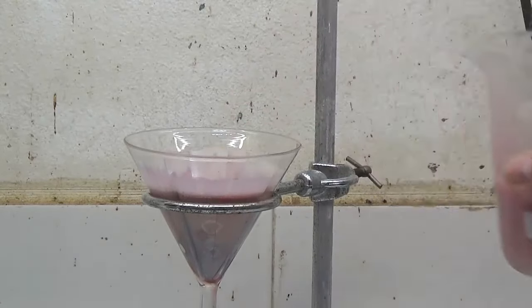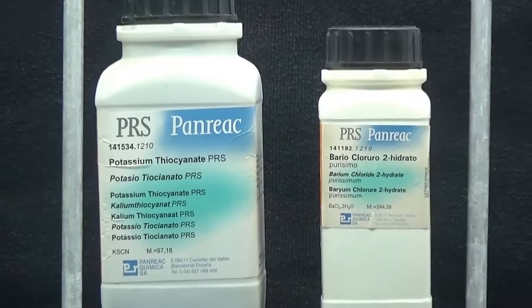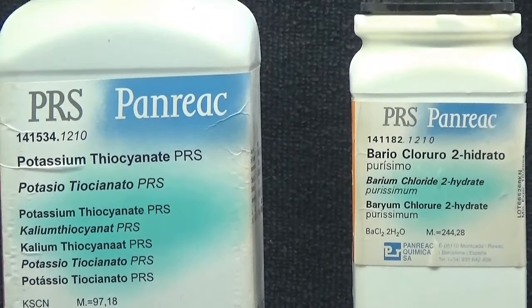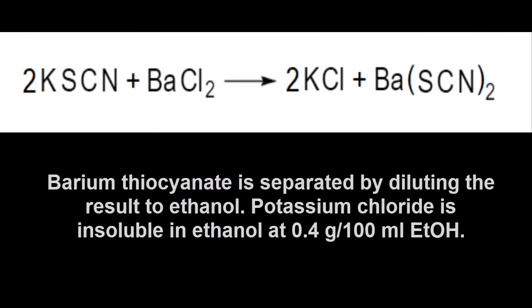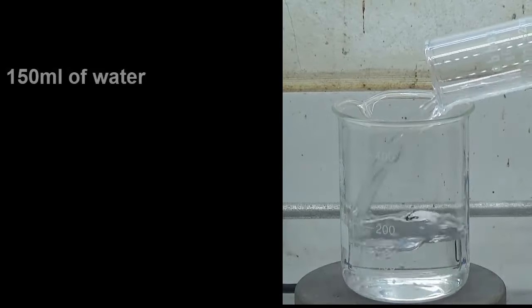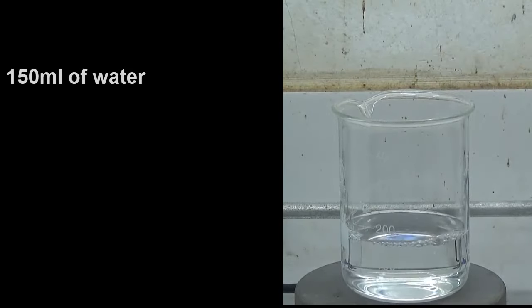For this synthesis, I did not have barium thiocyanate. I had to figure out a way to do it with the reagents available in my laboratory. Having studied the physical properties of barium thiocyanate, I found that it is very soluble in ethanol and I decided to obtain it by combining barium chloride and potassium thiocyanate.